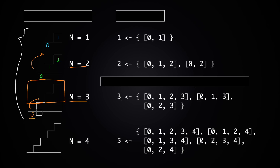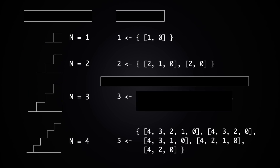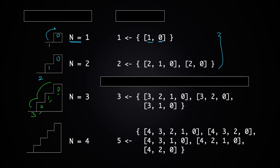To make the pattern clearer, let's relabel the steps from the top instead of the bottom. The top step becomes 0, then 1, 2, and the bottom step is 3. With this relabeling, when n=1 the bottom is step 1 and top is 0. For n=3, the paths become: 3→2→1→0, then 3→2→0, and so on. This relabeling helps us see the subproblem structure more clearly.